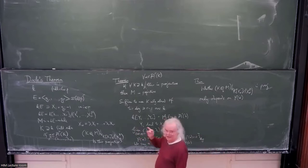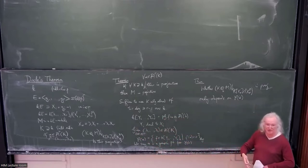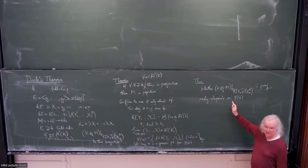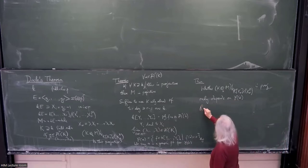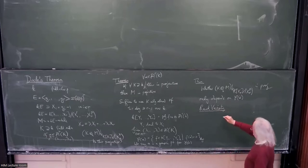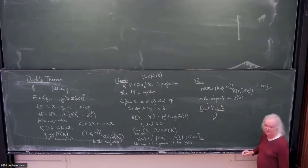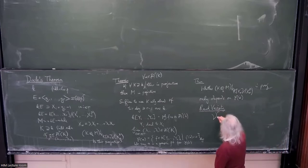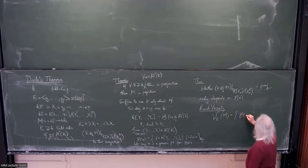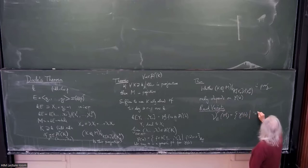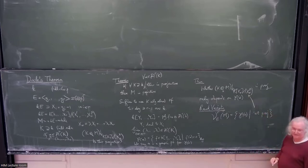Instead of a closed homogeneous subvariety of affine space as we had last time, what we're going to have is a set of primes — a set of homogeneous primes. The rank variety of an infinitely generated module, written with a curly V to indicate it's a set of primes, is the collection of p(alpha) such that the restriction K ⊗_k M to k[x_alpha]/(x_alpha^p) is not projective. This is what will give the layers of the stable module category.